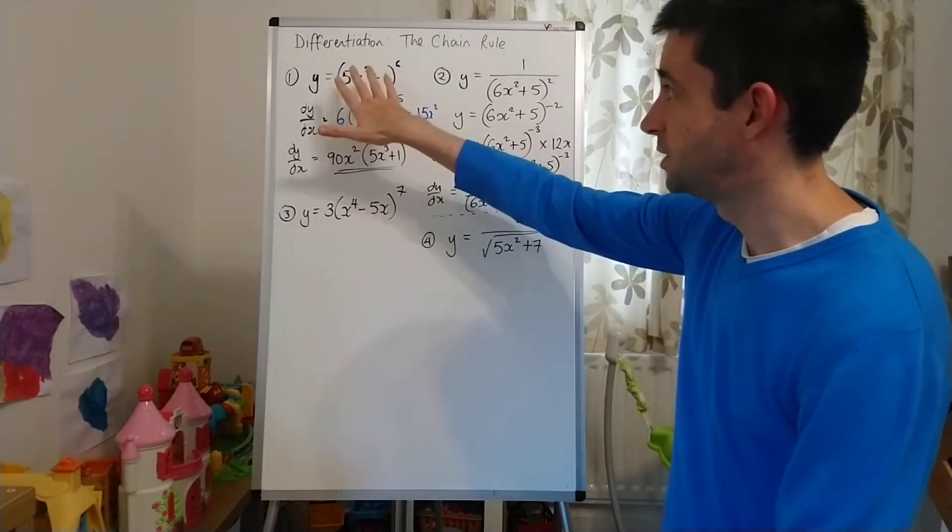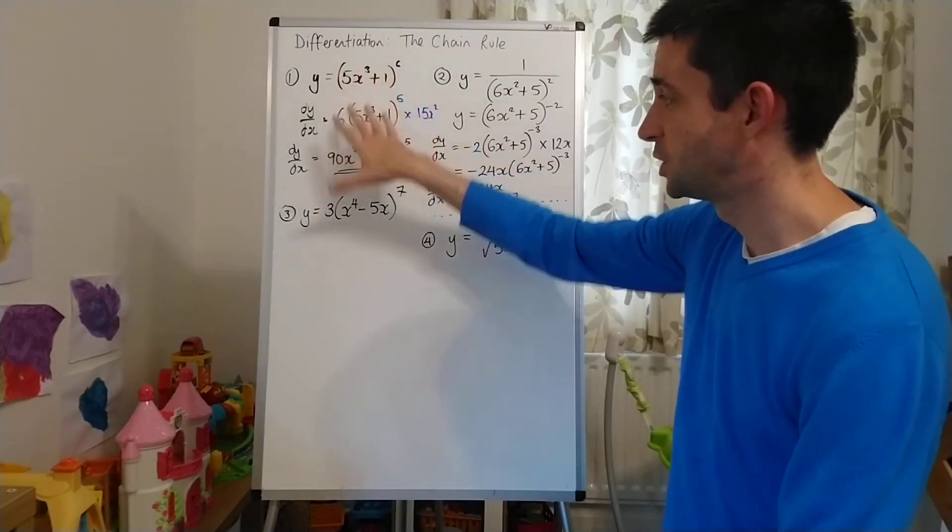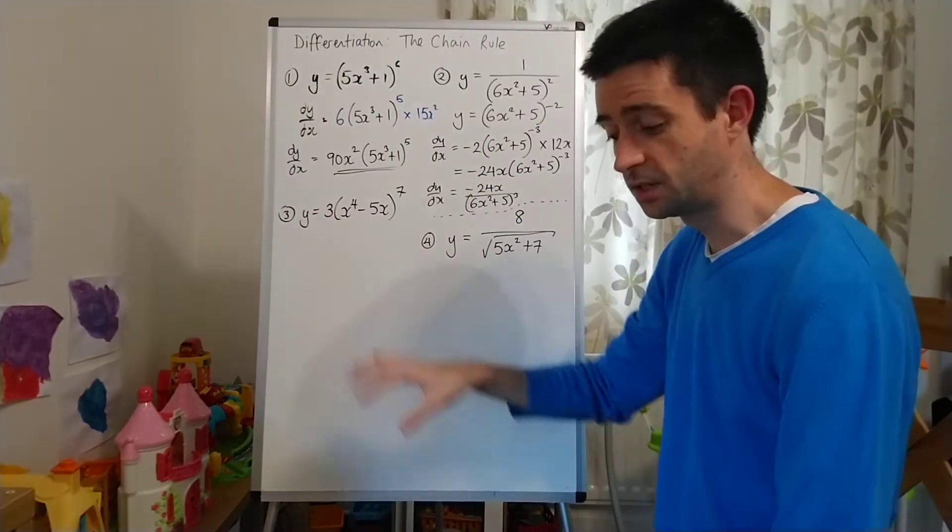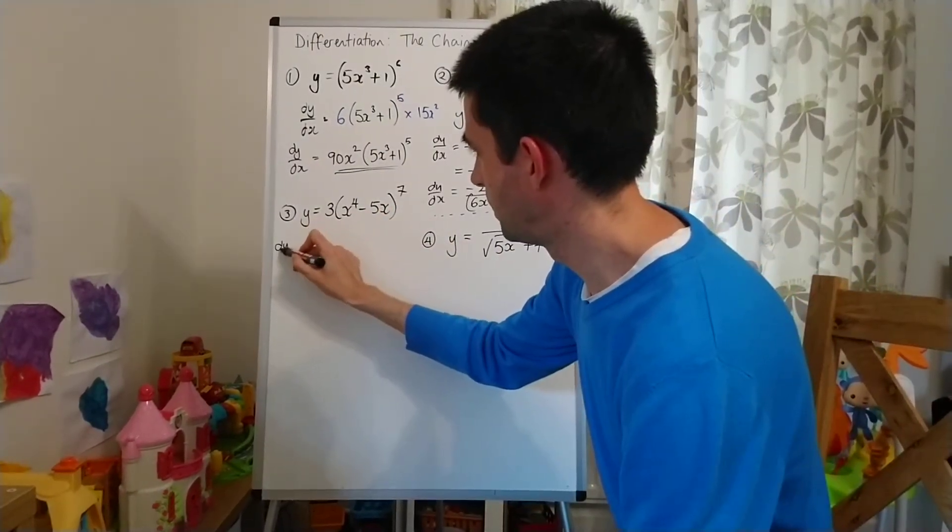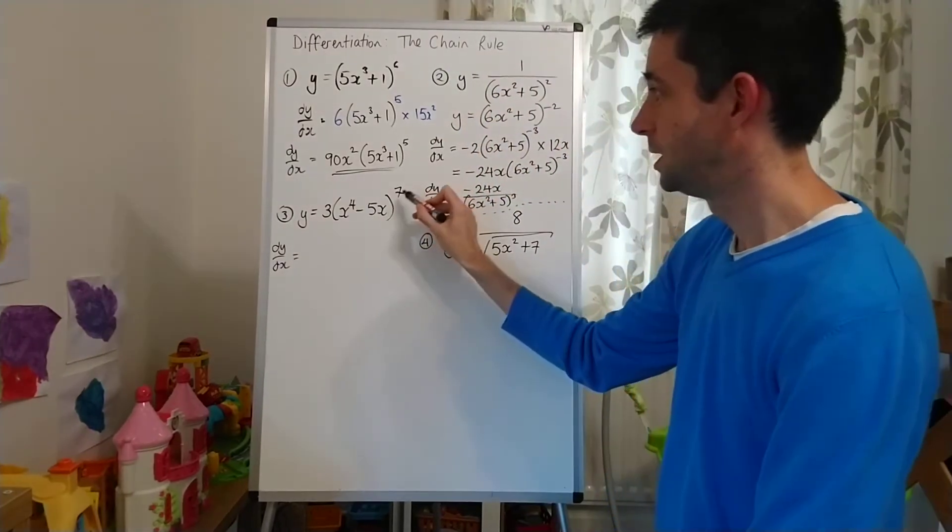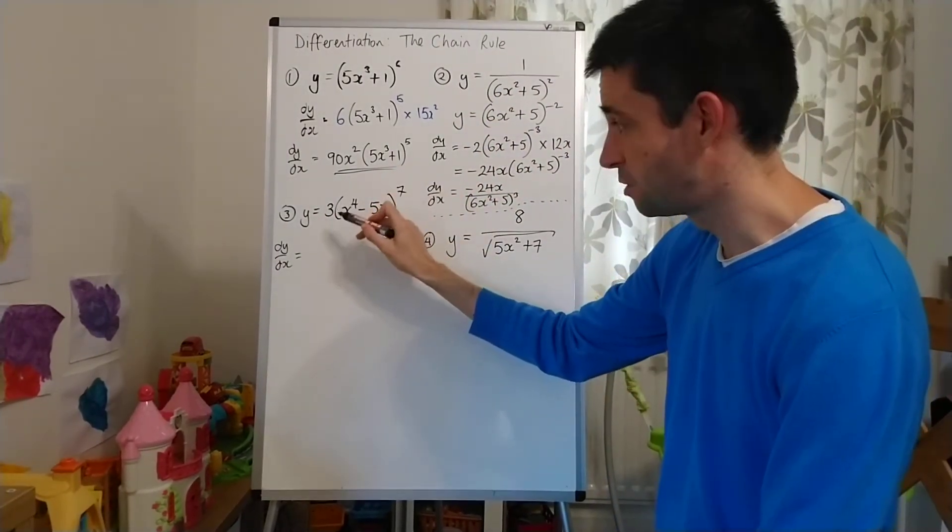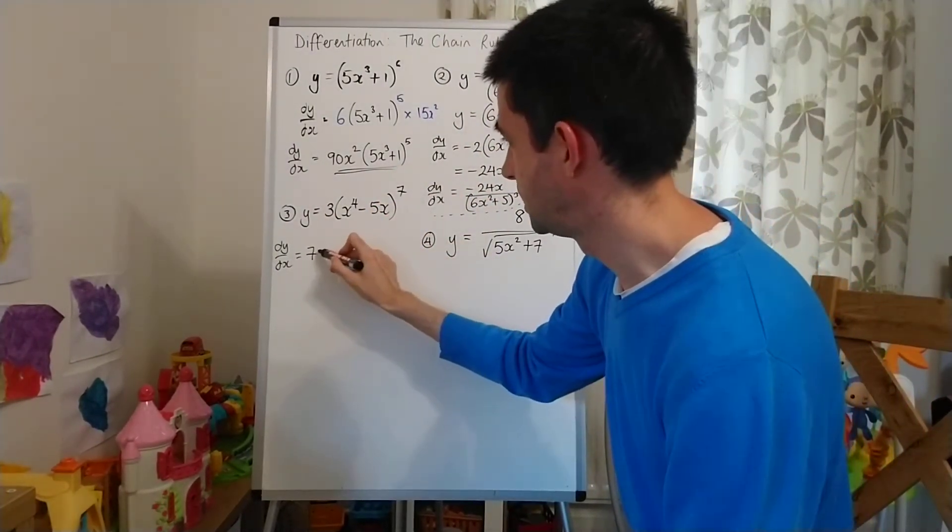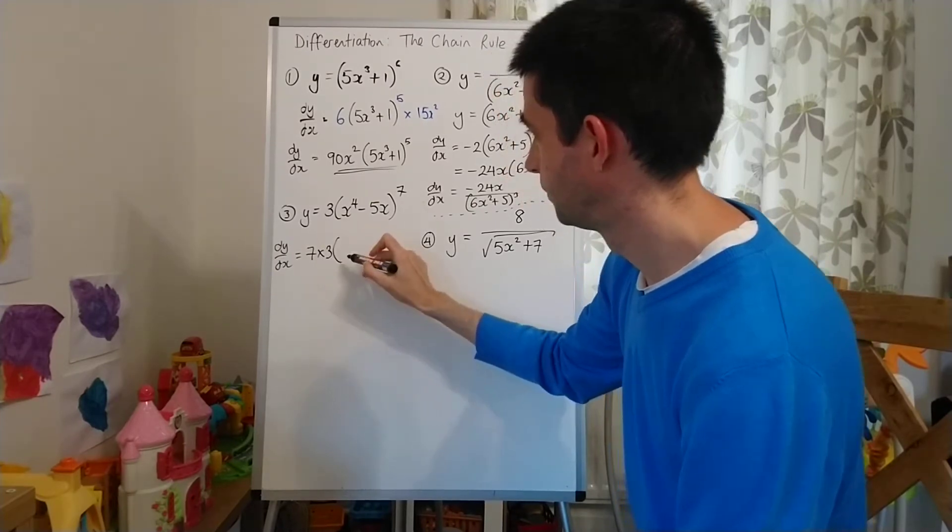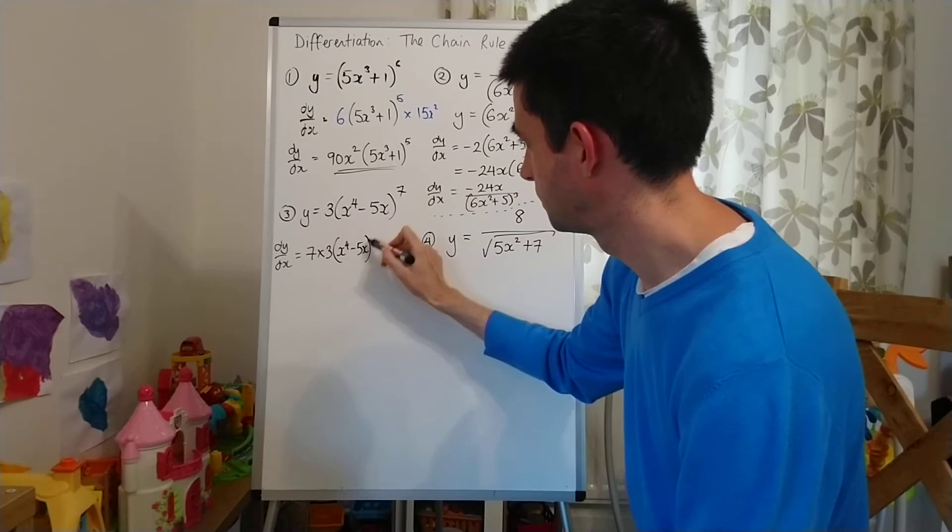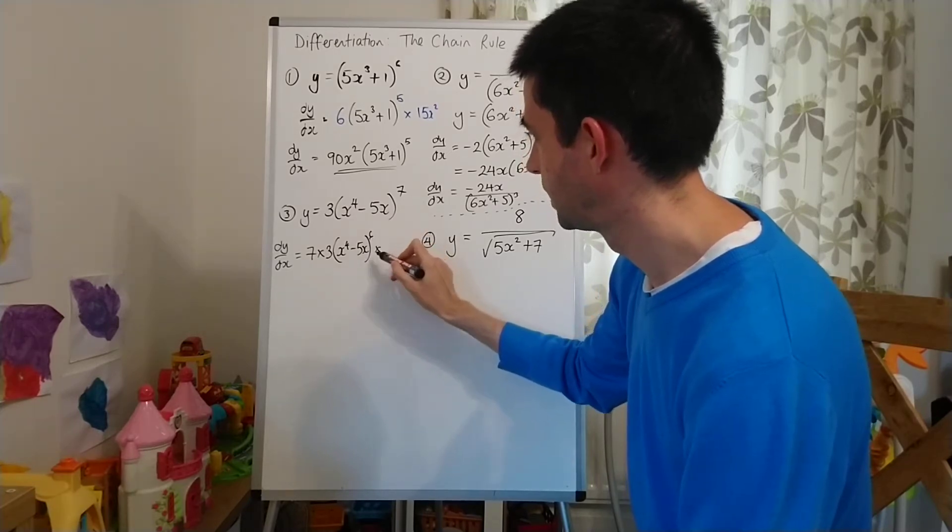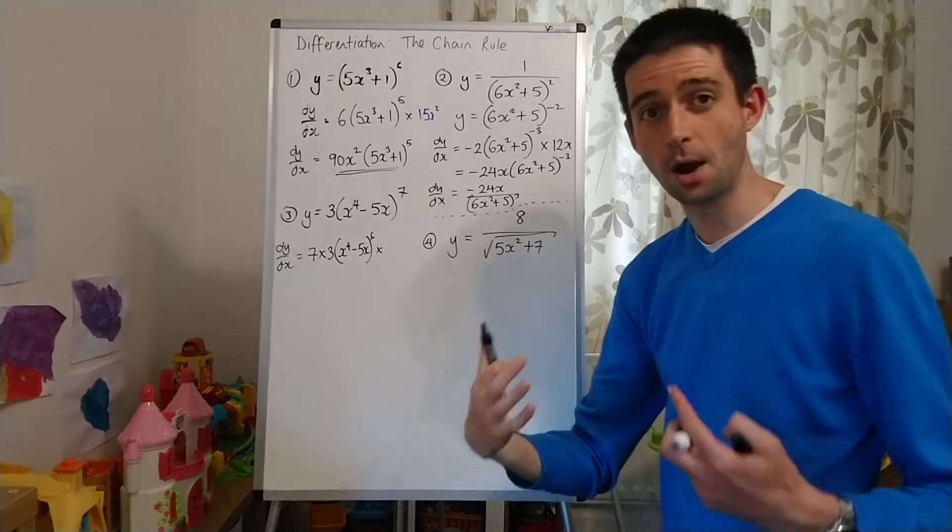This one here looks very similar to the first one. You'll see the purpose of having this as a separate example in a minute. When I differentiate, dy/dx. Power down. Now, 7 multiplied by the 3. So I'm going to write it as 7 multiplied by 3. (x⁴-5x)⁶ multiplied by the differentiated bracket.